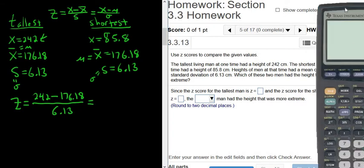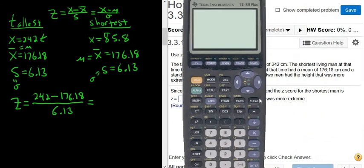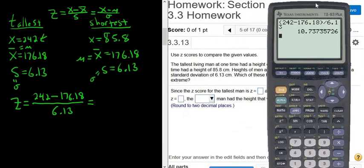Now, when you type it into your calculator, be really careful. You want to use parentheses. Let me turn it on. So clear. So parentheses, 242, minus 176.18, parentheses, divided by 6.13.